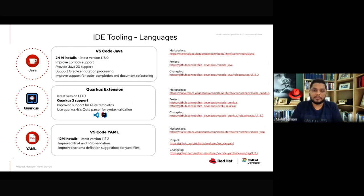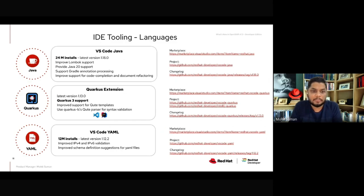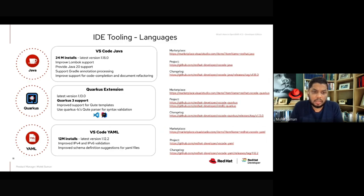Let's look at IDE extensions for specific languages like Java, Quarkus, and YAML. VS Code Java is the number one downloaded extension supported by Red Hat, with approximately 24 million installs. In the latest version 1.18.0, we have done multiple bug fixes and enhancements — prominently it now provides Java 20 support, improved annotation support, Gradle annotation processing, and multiple code completion and refactoring improvements.